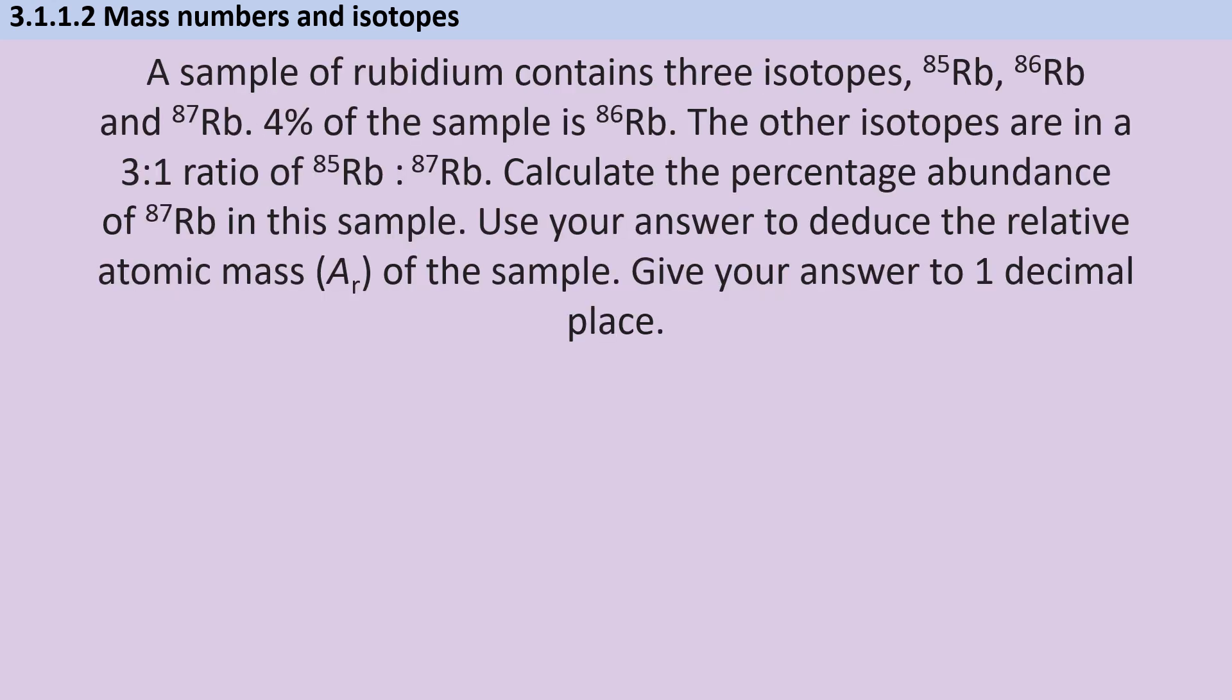For something slightly jazzier and a little bit more intimidating, but not actually any harder, you might be asked to do a little bit of additional arithmetic before you get to your chemistry. This question is very similar to one about strontium that AQA wrote in 2023. So we're given a sample of rubidium and it contains isotopes with masses of 85, 86 and 87. 4% of the sample is that middle isotope, rubidium-86. And the other isotopes are in a three to one ratio.